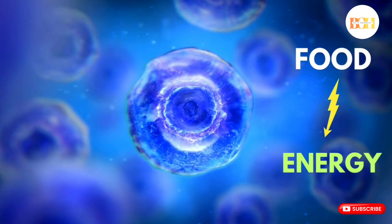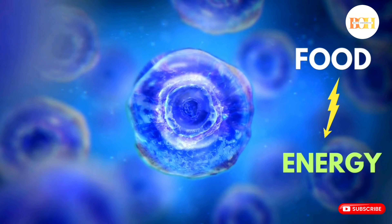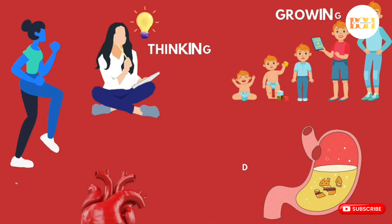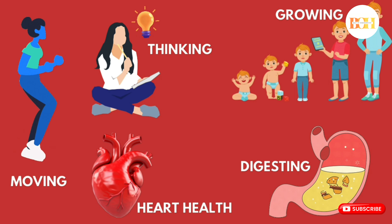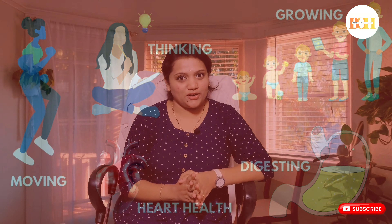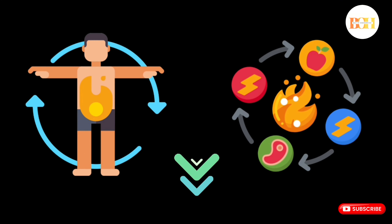During this reaction, the food which you eat is converted into energy inside these cells, which is later on used for all of your activities like moving, thinking, growing, digesting, for heart health, and so on. In hypothyroidism, this process of energy production or metabolism is slowed down.